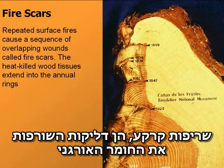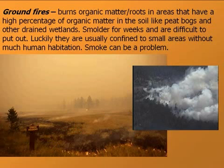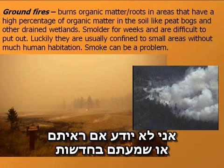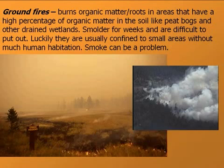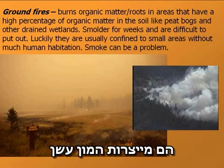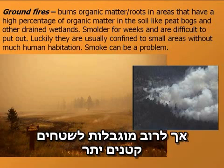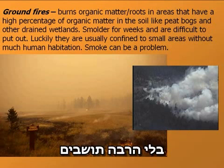Ground fires are fires that burn the organic matter, sometimes underground, in areas such as peat bogs or other wetlands. These fires have been known to burn for sometimes weeks or months and are very difficult to put out. They typically produce a lot of smoke, which can be a problem, but are usually confined to smaller areas without a lot of human habitation.